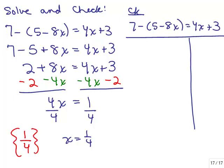Don't freak out — you can do this. Now we're going to check it. Plugging in one-fourth for x on the left side: 7 minus, and inside the parentheses we have 5 minus 8 times one-fourth. We have to work inside the parentheses first.